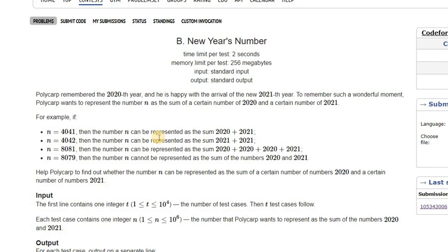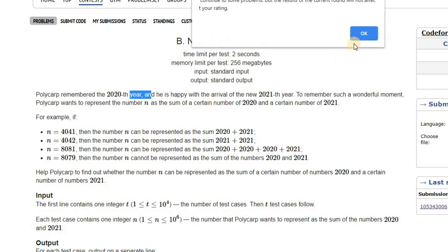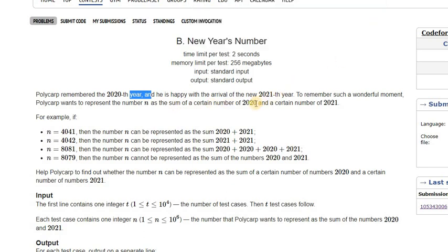Hi, so this is an analysis of the New Year's Number from the Code Forces Round 697 Division 3. Polycarp remembered the 2020th year, and he is happy to the 2021st year. To remember such a wonderful moment, he wants to represent the number N as a sum of X amount of 2020s and Y amount of 2021s.